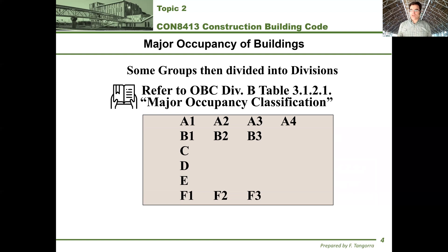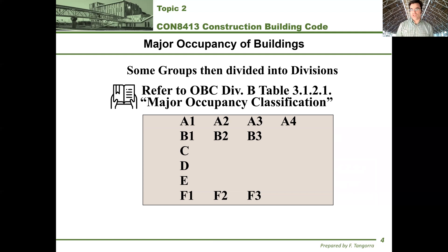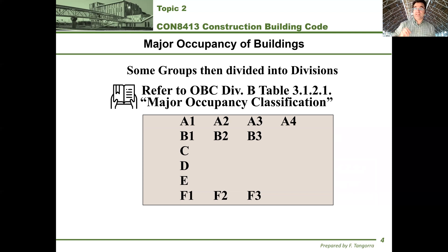The long way of saying it is Group A, Division 1; Group A, Division 2; Group A, Division 3; Group A, Division 4 — but in practice everyone just says A1, A2, A3, A4. Same for B occupancies: B1, B2, B3. And industrial occupancies, Group F, are furthermore subdivided into F1, F2, F3 depending on the level of hazardousness of that occupancy.